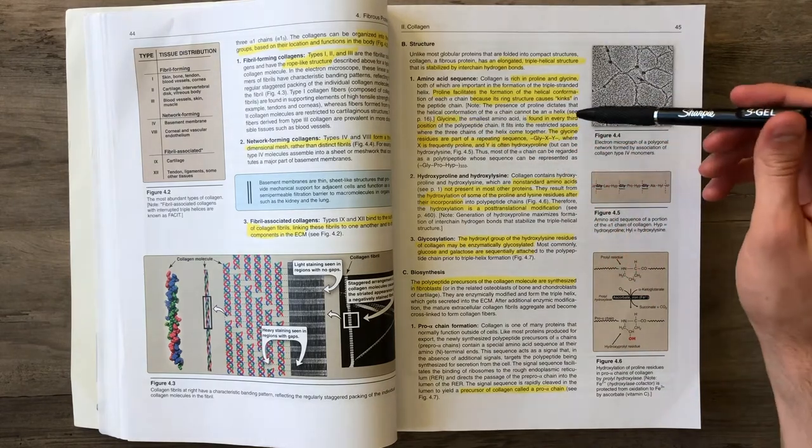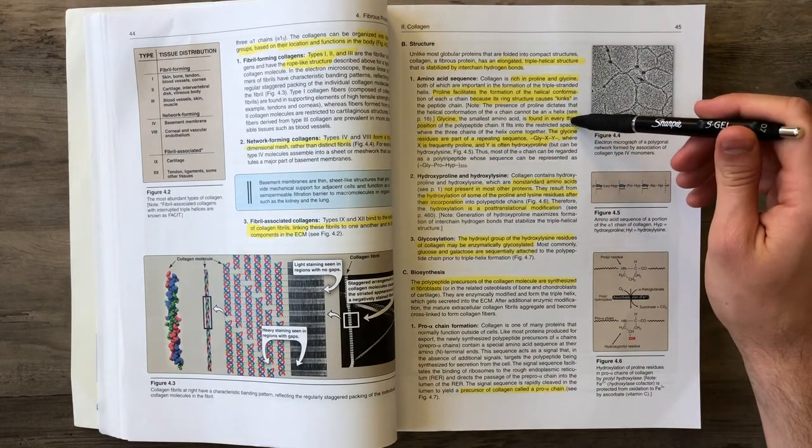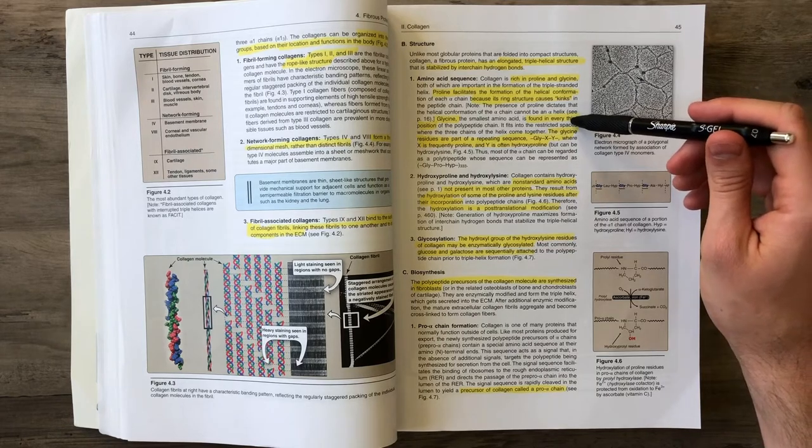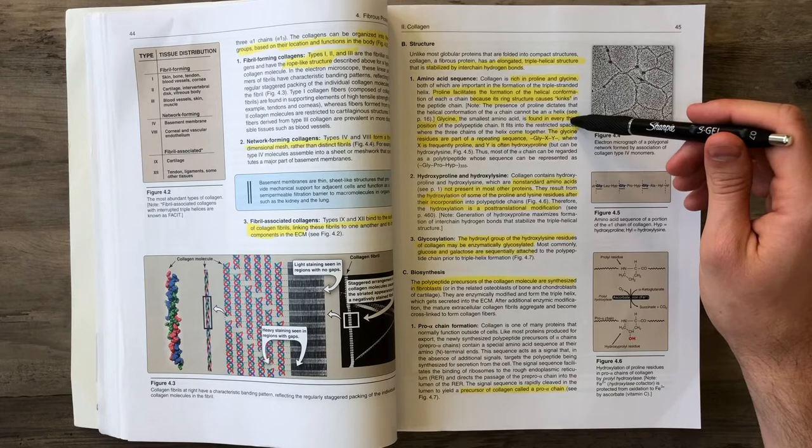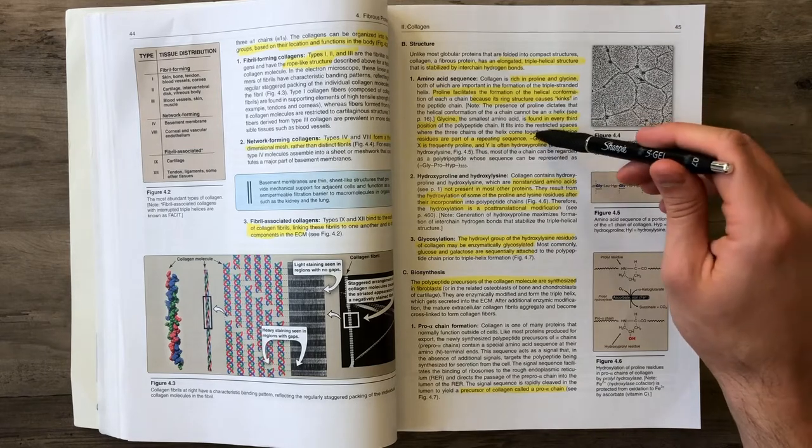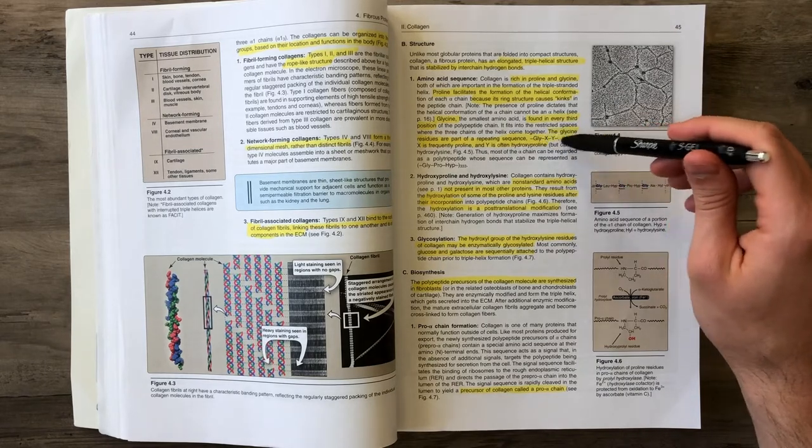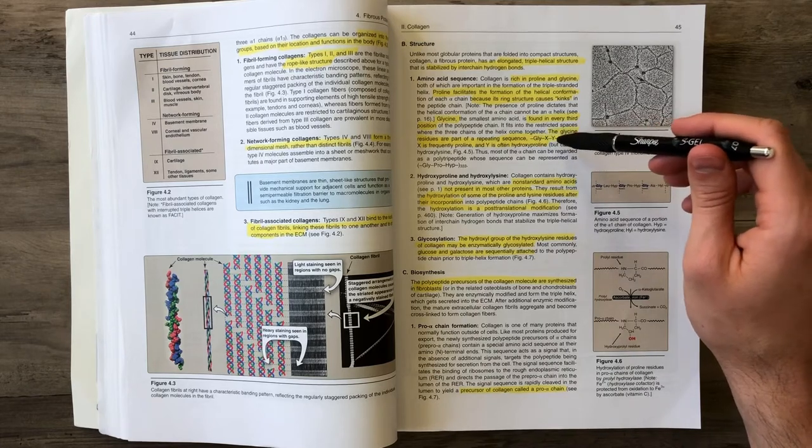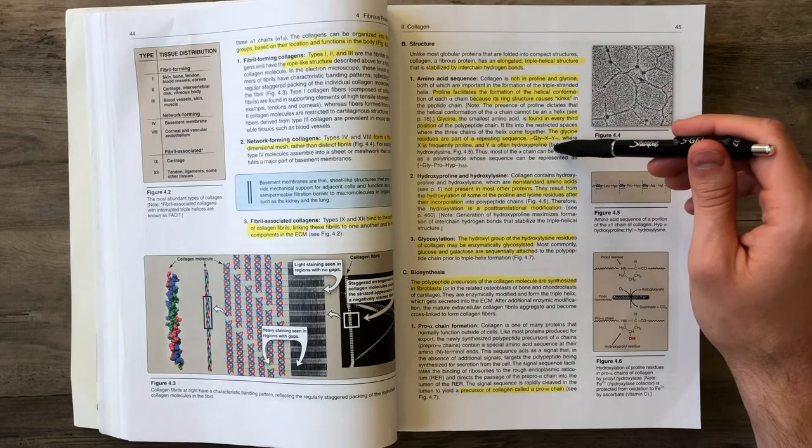Glycine is found in every third position within collagen because it's one of the smallest amino acids. We have a three amino acid repeating sequence of glycine, X, and Y, where X and Y are different amino acids. Typically, X is a proline and Y is a hydroxyproline.